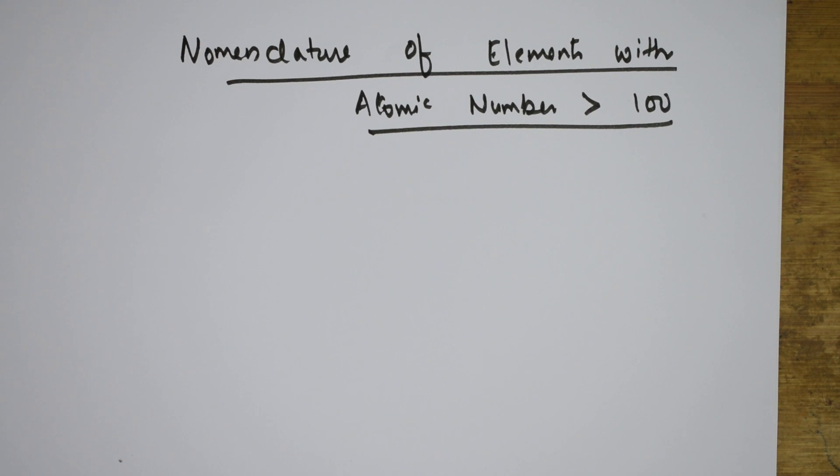Let us see the rules. First of all, the names are derived by using roots for the three-digit number. Let me explain.